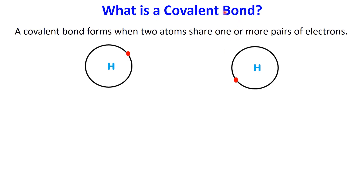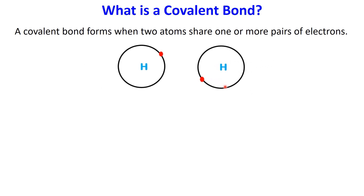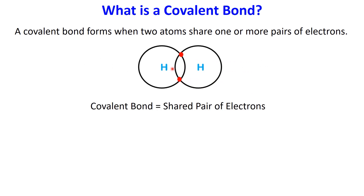What is a covalent bond? A covalent bond forms when two atoms share one or more pairs of electrons. Imagine two atoms, each with its own electrons. As they move closer, their outermost electron clouds overlap. This allows their electrons to pair up, creating a bond.